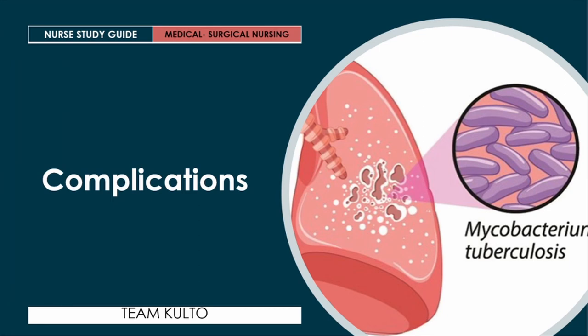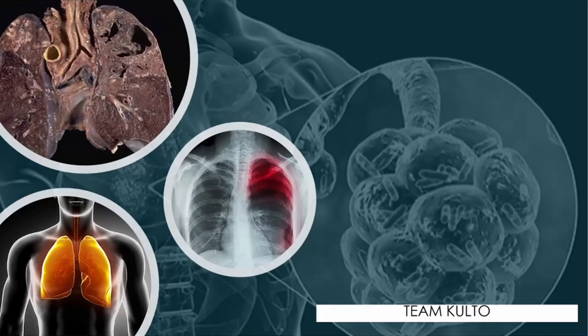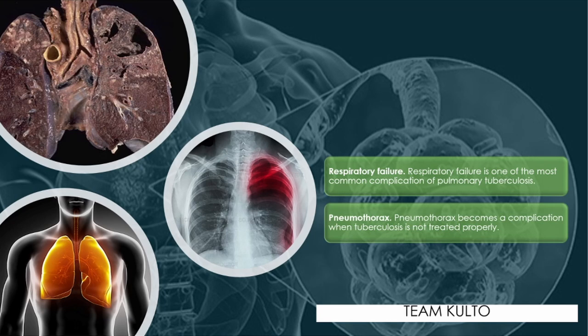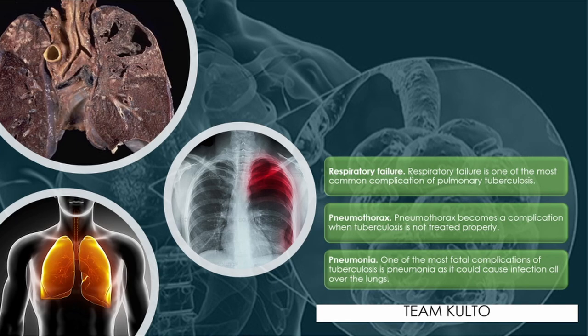Next, complications. If left untreated or mistreated, pulmonary tuberculosis may lead to the following: respiratory failure, which is one of the most common complications; pneumothorax, which becomes a complication when tuberculosis is not treated properly; and pneumonia, one of the most fatal complications, as it could cause infection all over the lungs.